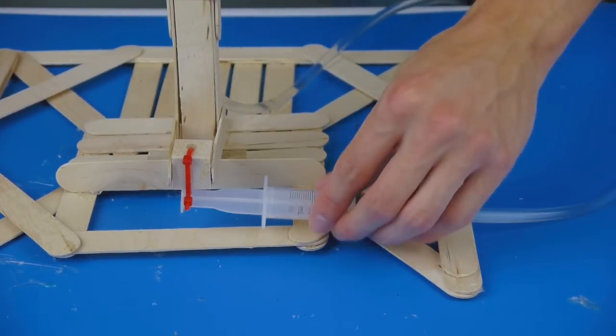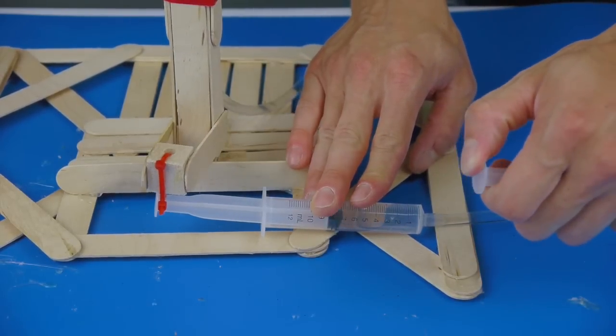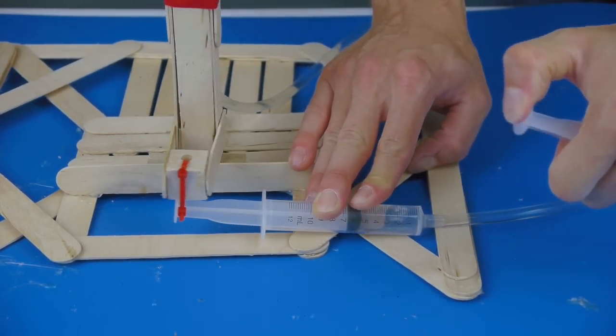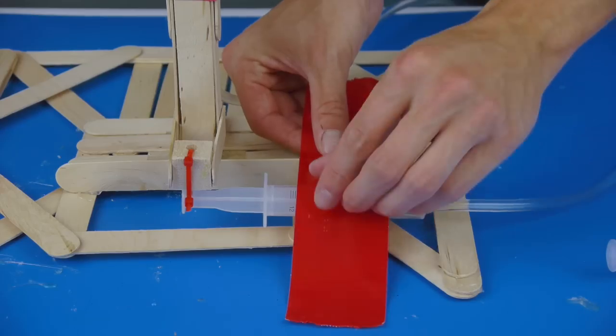Fill the syringe halfway with water and point the fighting arm straight forward. Hold the syringe in place and try it out. The fighting arm should move side to side in equal amounts. Strap the syringe to the base with another piece of duct tape.